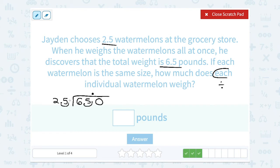Well 25 doesn't go into 6, 25 does go into 65. 25 goes into 65 two times. Two times 25 is 50. So I'm going to subtract that 50, and it leaves me with 15. And now I'm going to bring down that next zero.